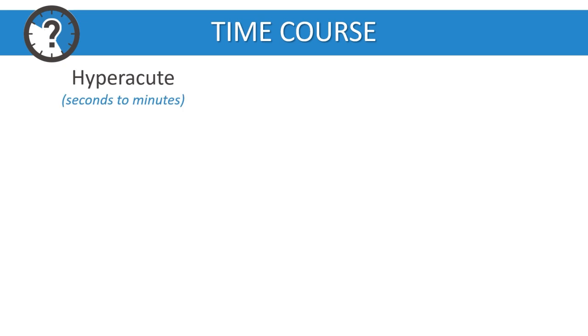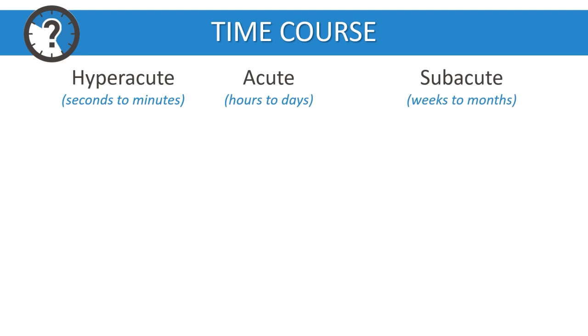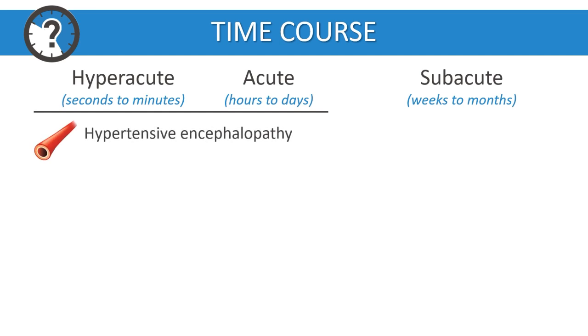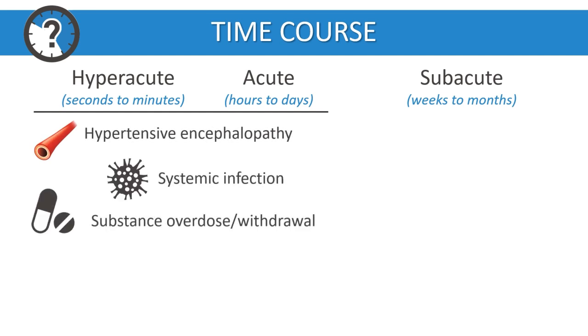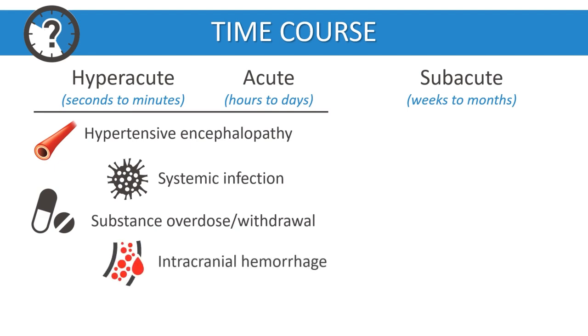The first step is to obtain a detailed history, including last known well time and whether symptom onset was hyperacute (seconds to minutes), acute (hours to days), or subacute (weeks to months). Causes for hyperacute and acute encephalopathy may include hypertensive encephalopathy, systemic infection, substance overdose or withdrawal, intracranial hemorrhage, or seizure.